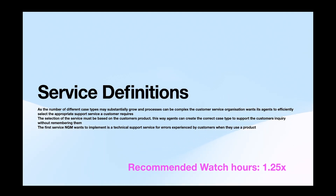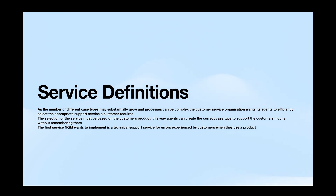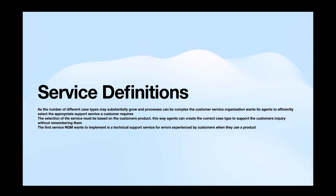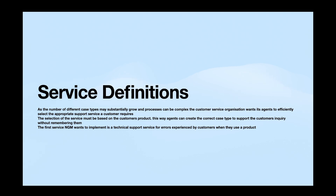Hey everyone, today we are going to see about service definitions. A number of different case types may substantially grow and processes can be complex. The customer service organization wants its agents to efficiently select the appropriate support service. The selection of service must be based on the customer's product, so agents can create the correct case type to support the customer's inquiry without having to remember them. The first service engine wants to implement the technical support service for errors experienced by customers when they use the product.